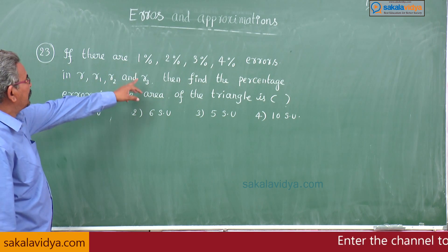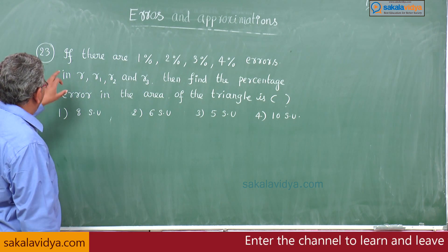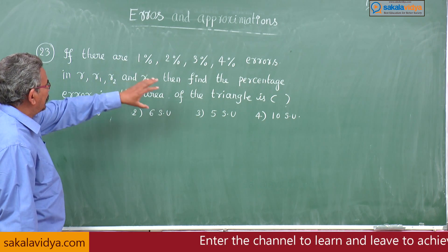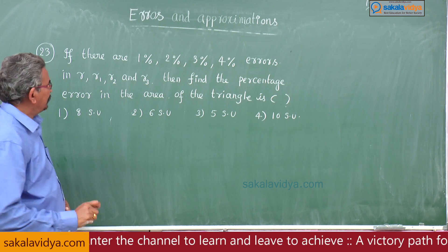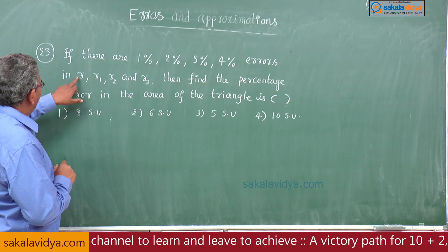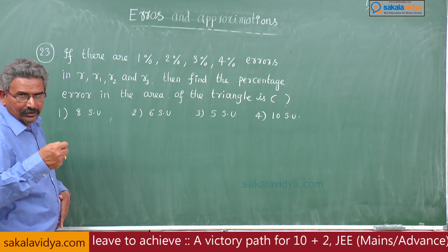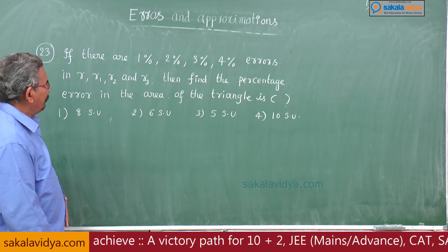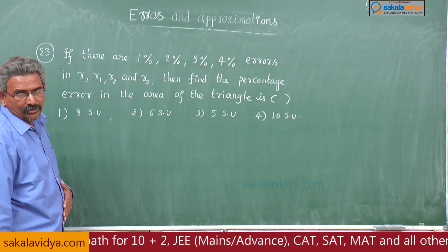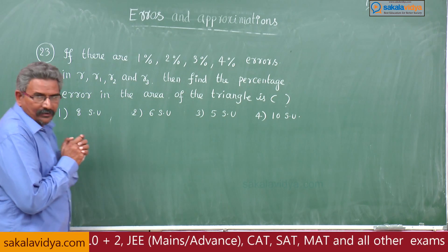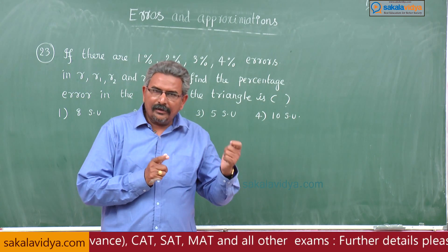23rd question: If there are 1%, 2%, 3%, and 4% errors in r, r1, r2 and r3 respectively, find the percentage error in the area of the triangle. That means δr/r × 100 = 1, δr1/r1 × 100 = 2, similarly for r2 and r3. We have the relation between r, r1, r2, r3 and the area s of the triangle.